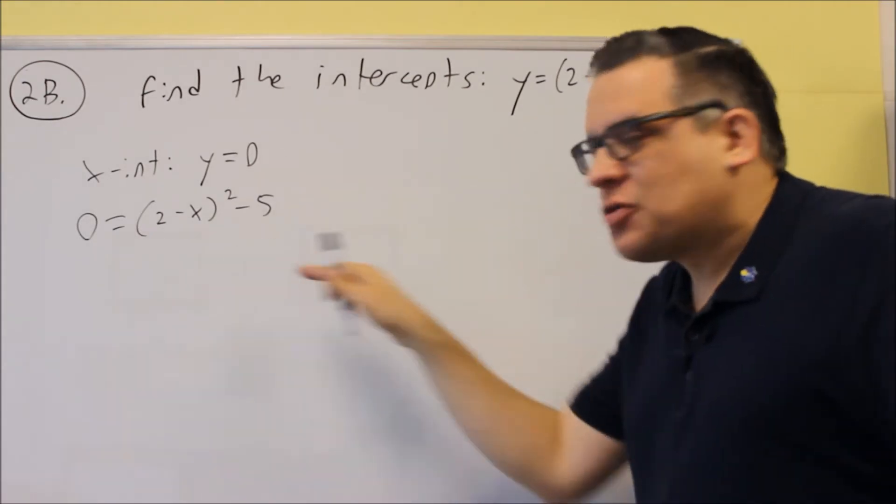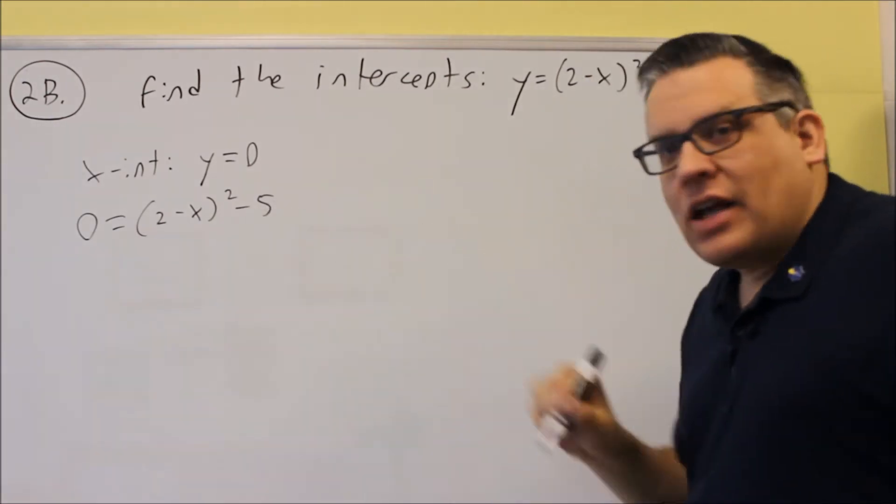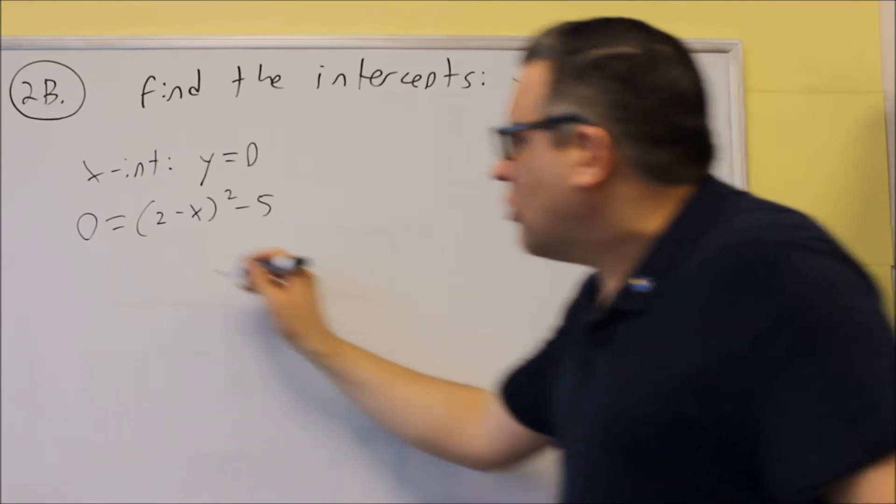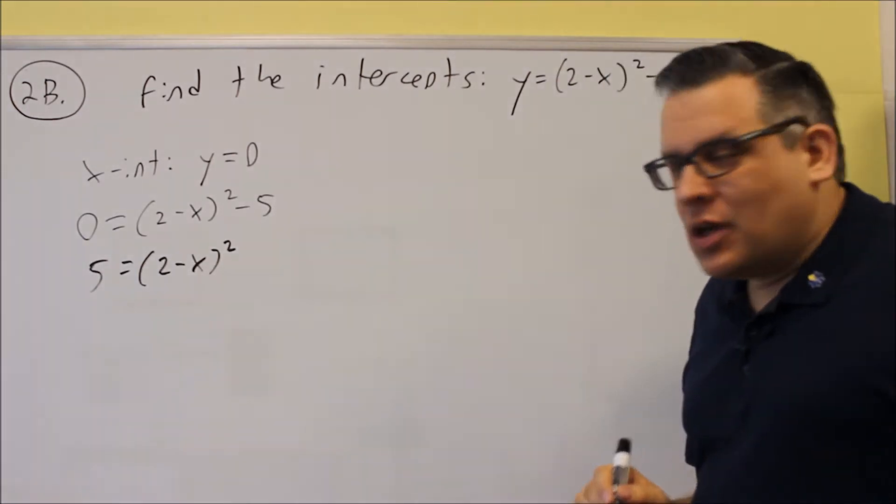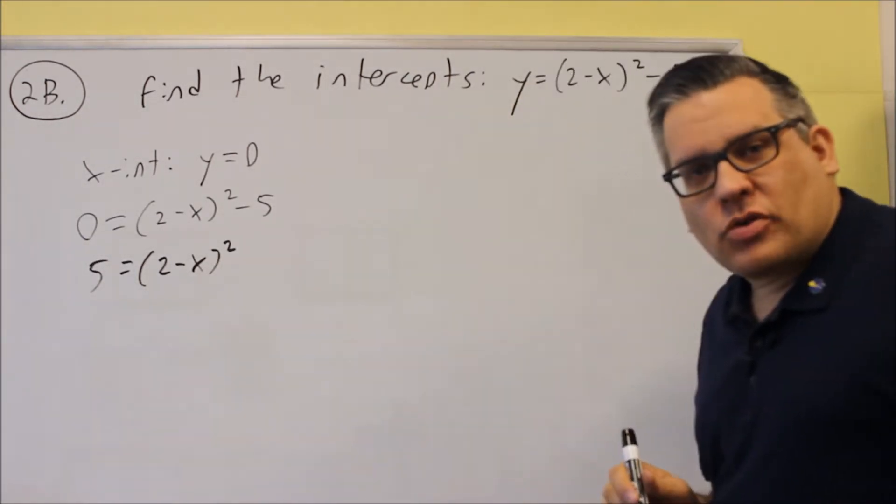What you're going to do is, instead of expanding it, we're going to instead add 5 to both sides of the equation. We're going to isolate the one that's squared. Then you're going to take the square root of both sides.